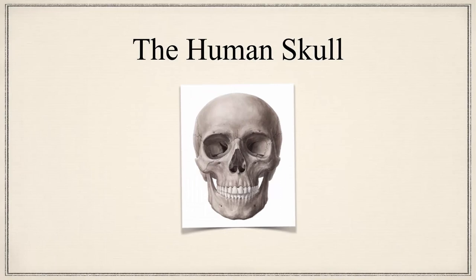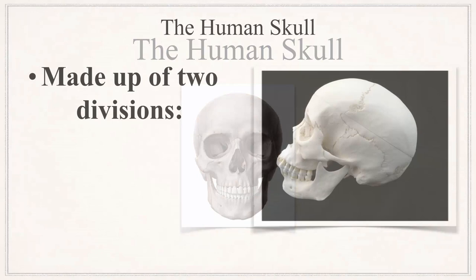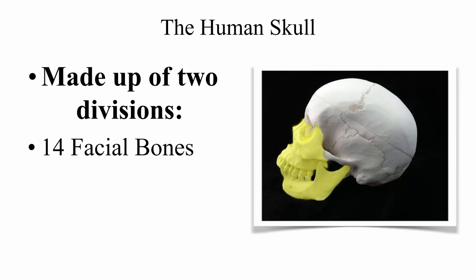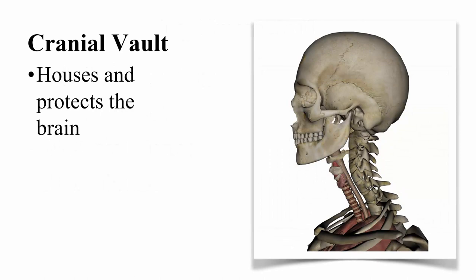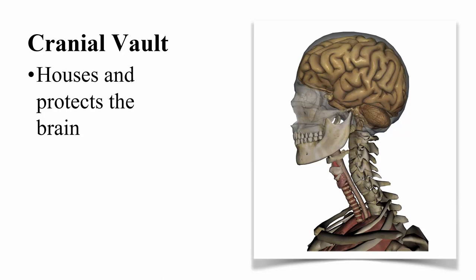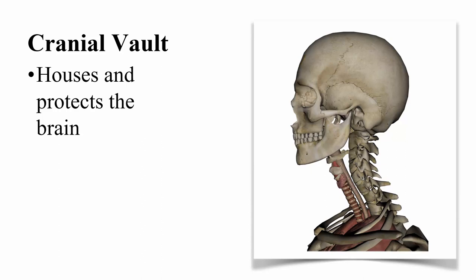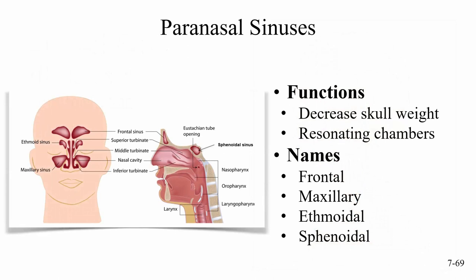Now let's take a look at the human skull. The human skull is made up of two divisions: 14 facial bones and 8 cranial bones. The cranial bones make up the cranial vault, which houses and protects the brain. The skull is not totally solid — besides the cavities that hold the brain and the nasal cavity, there are also other cavities known as the paranasal sinuses. Their function is to decrease the weight of the skull and also act as a resonating chamber.